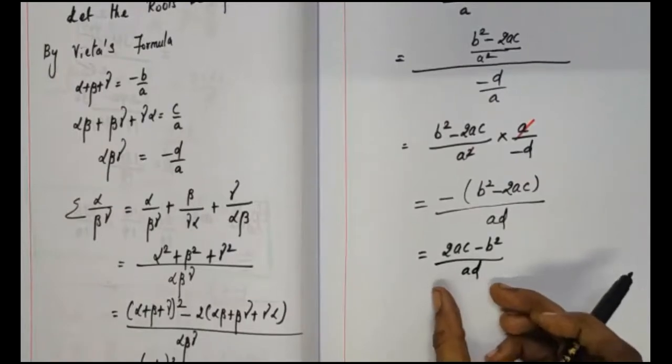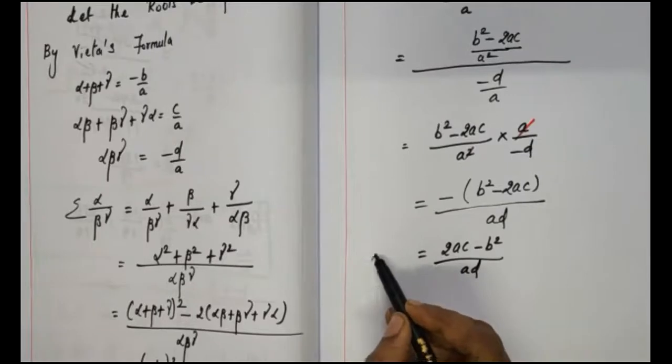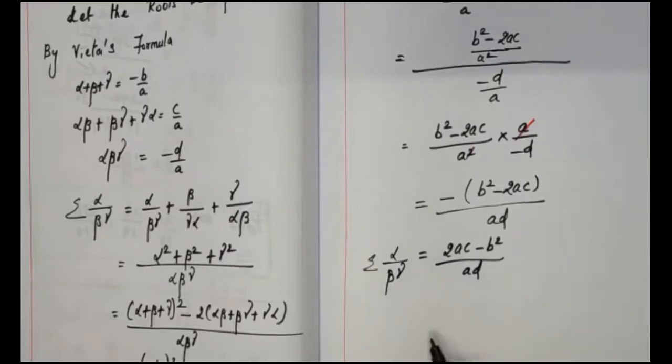For sigma alpha by beta gamma, question number 7 complete. Do you have a doubt?